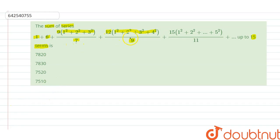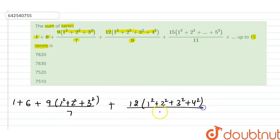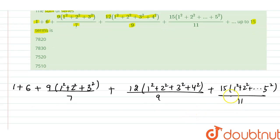Let us try to make this series and find out if there is any pattern in this given series or not. So let us write down the series we have: it is 1 plus 6 plus 9 multiplied by (1² + 2² + 3²) divided by 7, plus 12 multiplied by (1² + 2² + 3² + 4²) divided by 9, plus 15 multiplied by (1² + 2² + ... + 5²) divided by 11. So this is an infinite series.